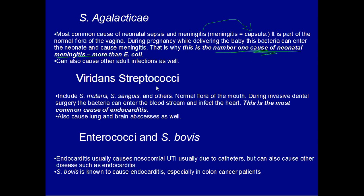Viridans streptococci are bacteria that inhabit the mouth as normal flora, and they're usually associated with invasive dental surgery that opens up a wound in the mouth, allowing bacteria to enter the bloodstream and cause endocarditis. This is the most common cause of endocarditis, and dentists used to give prophylactic antibiotics before dental surgery to prevent this. Think of organisms like streptococcus mutans or sanguinis in association with endocarditis. They can also cause lung and brain abscesses.